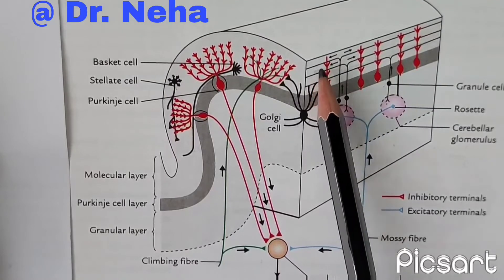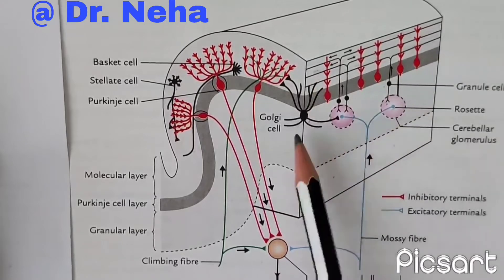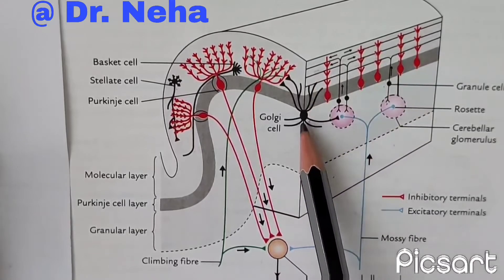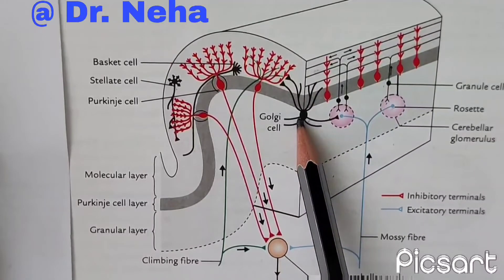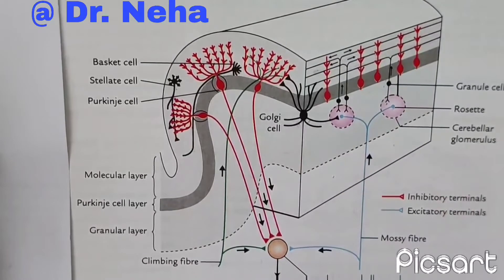Then we have the Golgi cells. Golgi cells are large and prominent but scanty, and their dendrites ramify in the molecular layer.